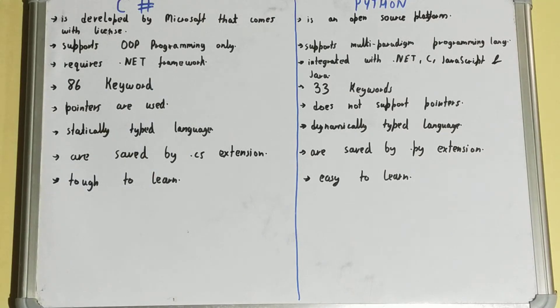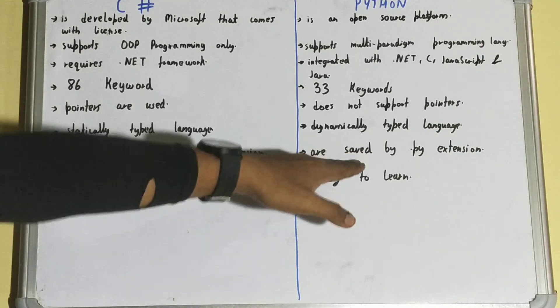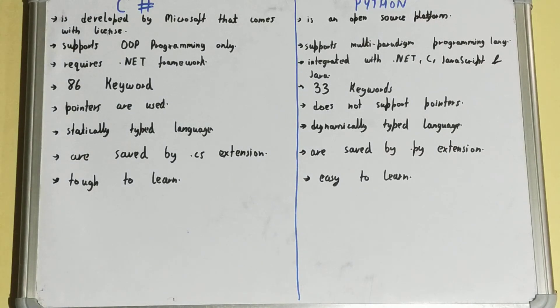C# files are saved by .cs extension, whereas Python programs are saved with .py extension.